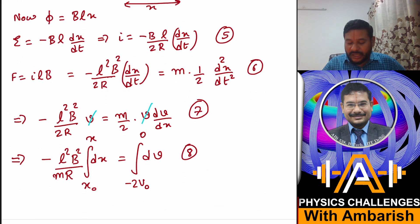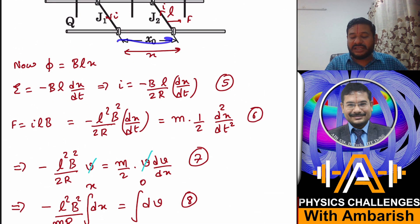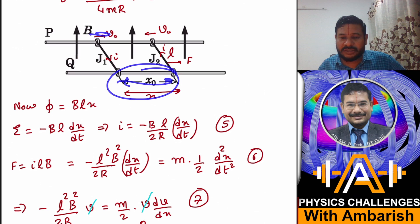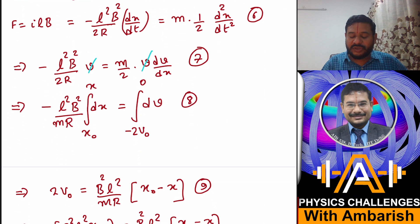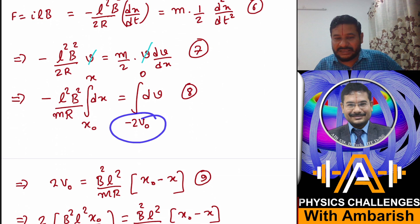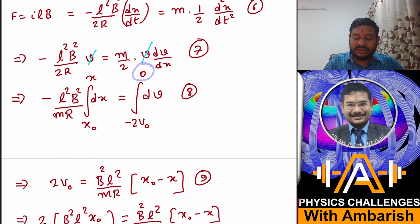I know that at - so what's the initial value of v? v is dx/dt and initial value is v₀, so dx/dt initial is minus 2v₀, that's what I've written. Initial value is minus 2v₀ and finally when they're at steady state separation, final relative velocity becomes zero. So minus 2v₀ to zero over here, and here from x₀ to x.